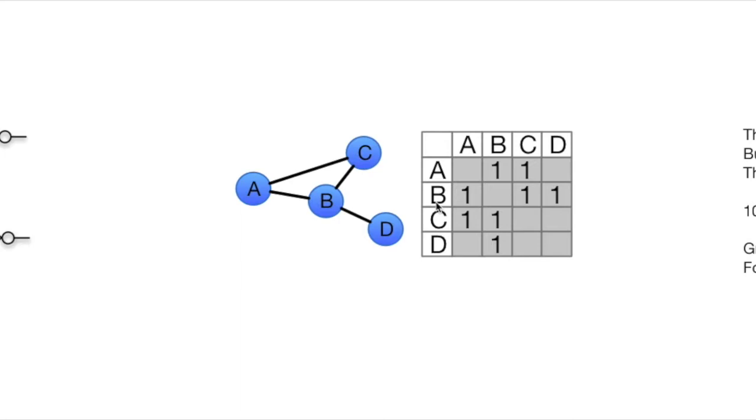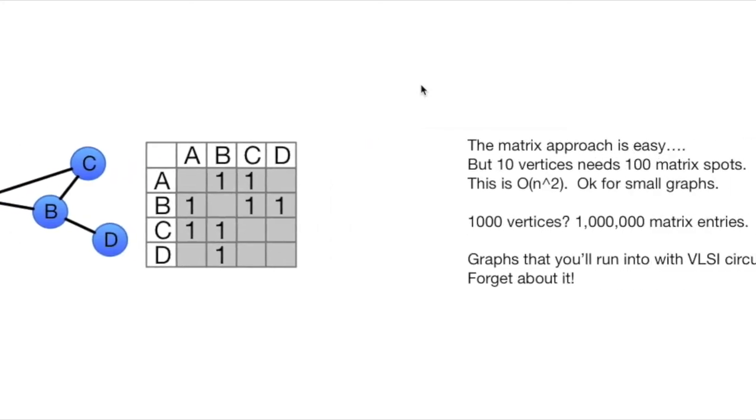In terms of implementing these things, the temptation is probably to go for a simple matrix. So you've got four vertices, and you can just build a 4x4 matrix. There's a connection from A to B, throw one into the slot from A to B, and if it's an undirected graph, it'll be symmetric along the diagonal. Very straightforward, easy way to implement it, but it runs into trouble pretty quick.